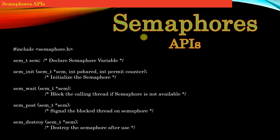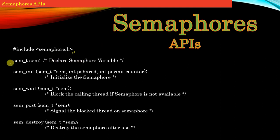Now we will discuss the APIs using which we will work with semaphores. To work with semaphores, first you need to hash-include the header file semaphore.h. To make use of semaphores, we need to make use of these 5 APIs.